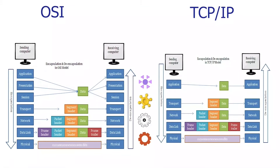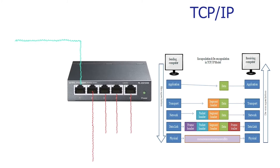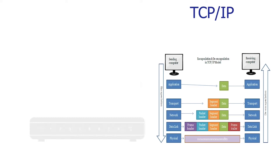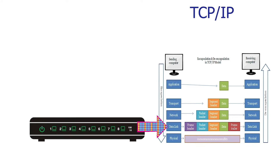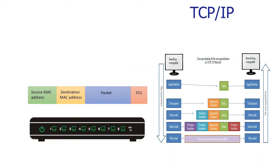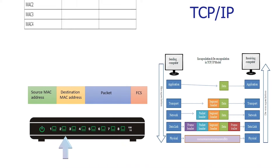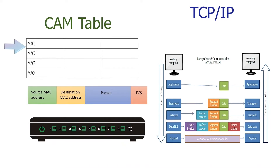Each layer processes data in different formats, meaning a device will understand and process data only in its supported format. Layer 1 uses data in the form of signals. A hub works only on layer 1. An Ethernet switch works on layer 2, which processes data in the form of frames. A frame contains the hardware address of the source and destination devices. A switch uses source addresses to learn about connected devices and destination addresses to make forwarding decisions, saving source addresses in a table known as the CAM table.